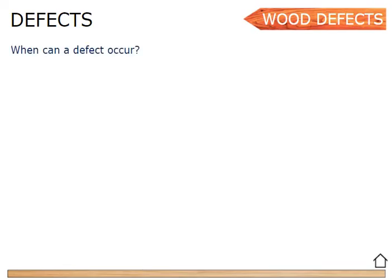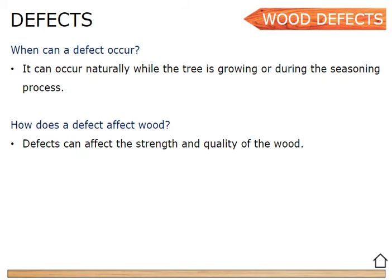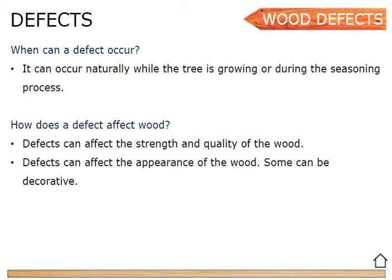So, defects. Wood defects — when can they occur? They can occur naturally while the tree is growing or during the seasoning process. Seasoning is when we dry out the wood. How does a defect affect the wood? A defect can affect the strength and the quality of the wood, making it harder for us to work with it. Defects can also affect the appearance of the wood.